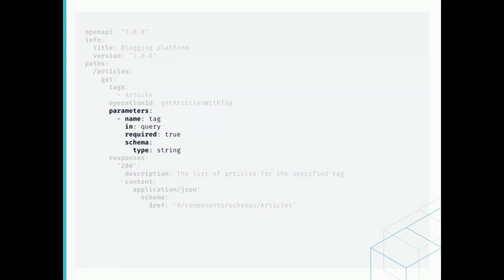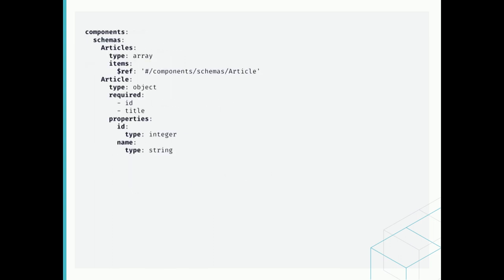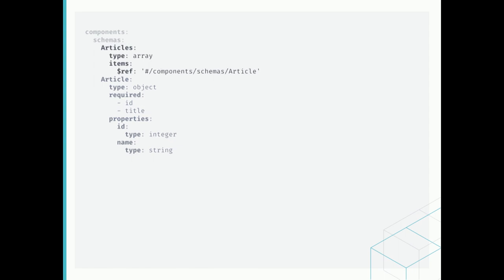We also define the parameters that we need to pass for each invocation to those endpoints, and all the responses that we can get as a result. Data models that we can exchange with our backend are collected in a different section of this file, where we can distinguish single entities with their properties and their types, and we can refer to them to create more complex structures like arrays.